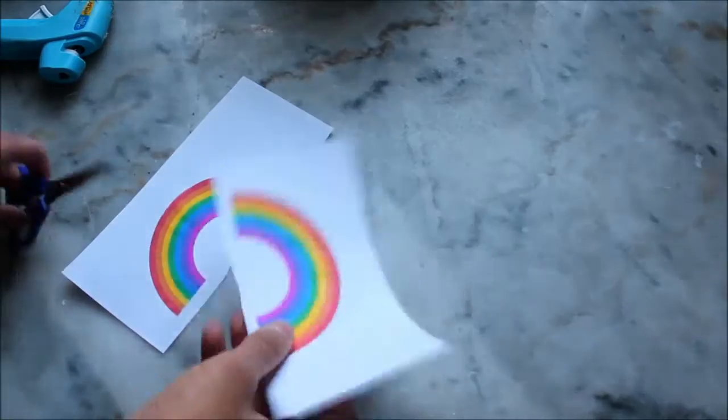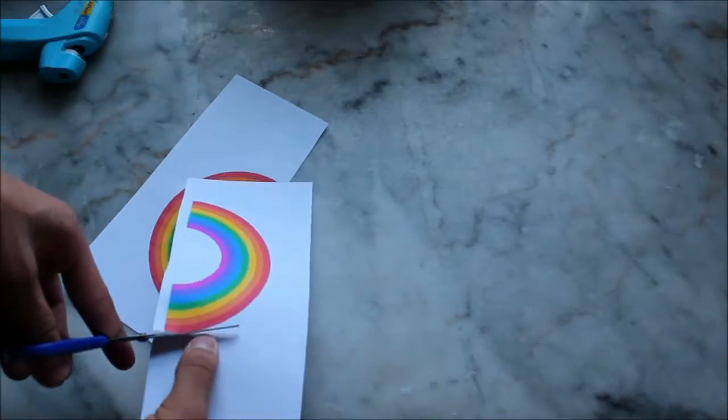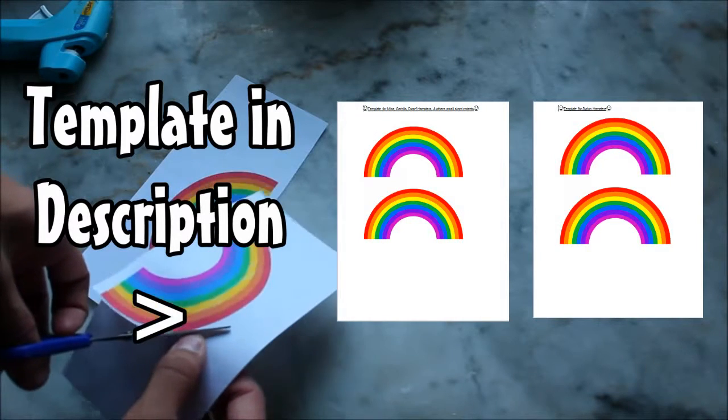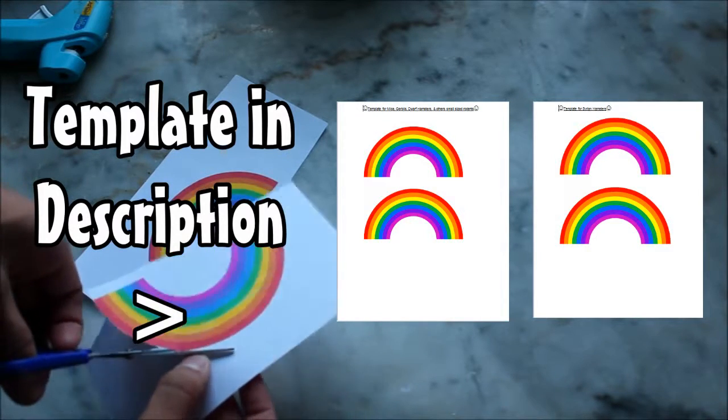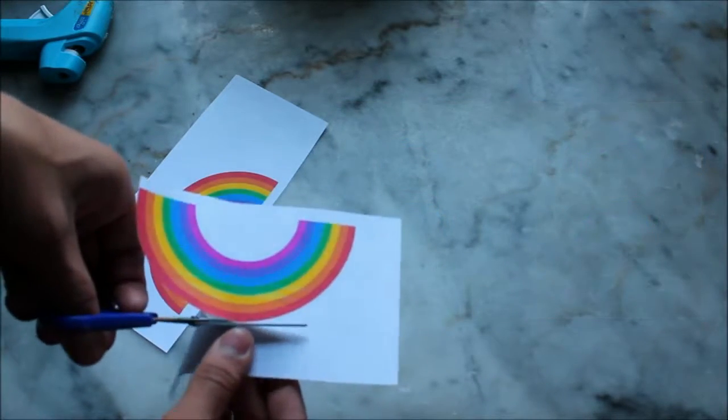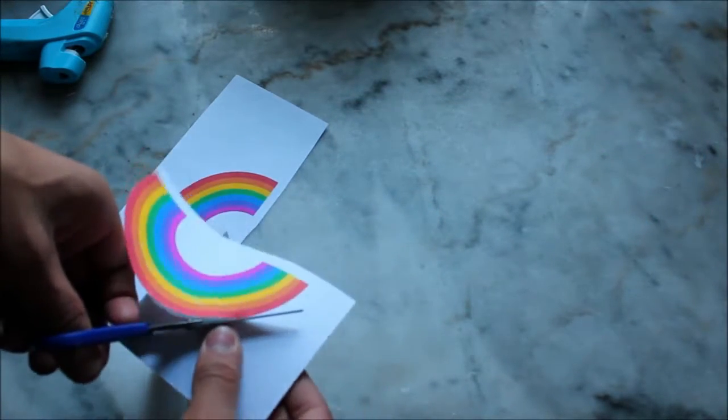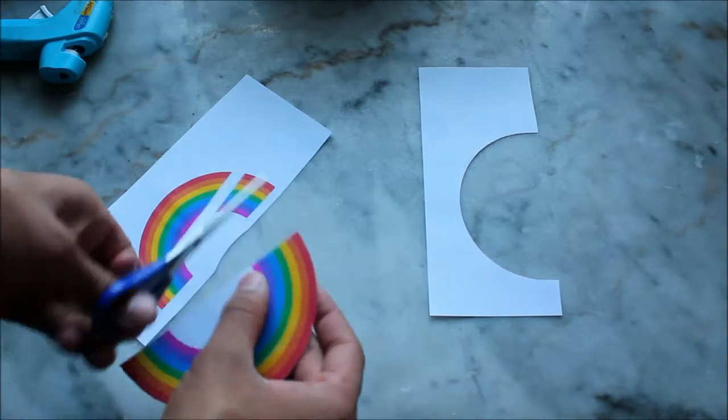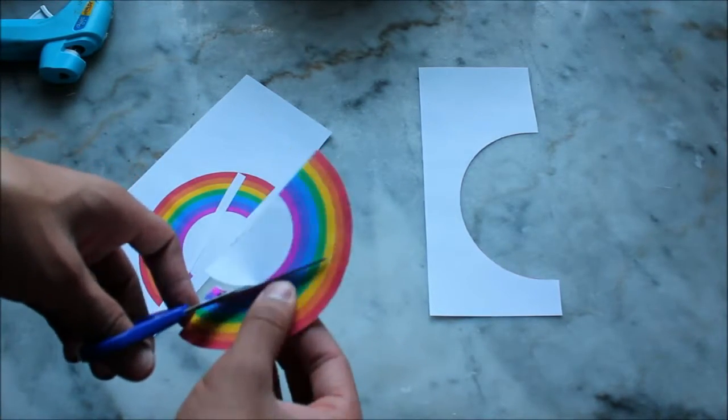First, you're going to print out the template that I have in the description. There are two different templates: one for Syrian hamsters and one for smaller rodents such as dwarf hamsters, mice, etc. Just print out the template in the size you want and cut them out.